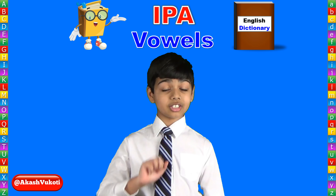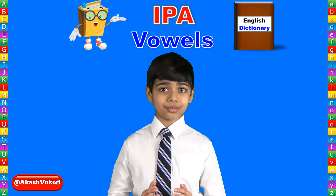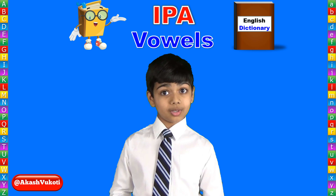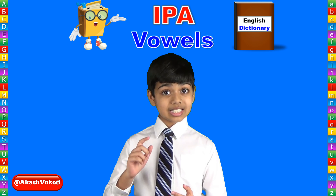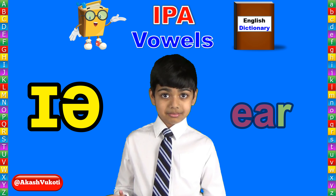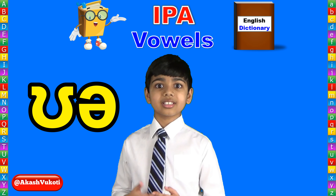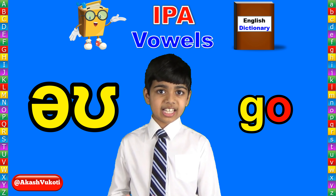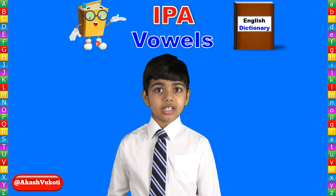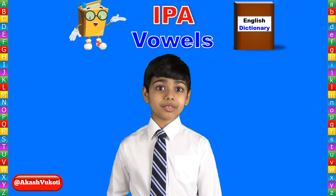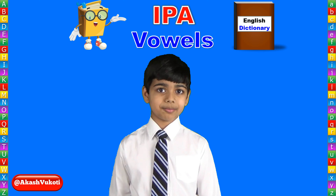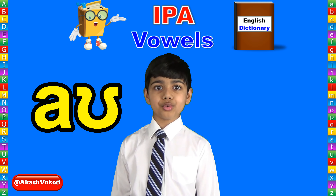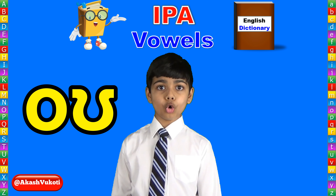These are the five diphthongs you need to know. There are also a few British and Australian ones, such as: 'i' as in Mia, 'u' as in tourist, 'o' as in go, and 'a' as in there. To recap the five diphthongs: i, oy, ow, ay, and oh.